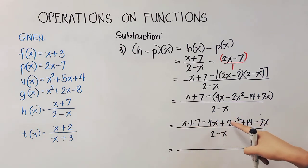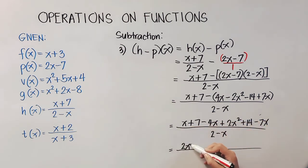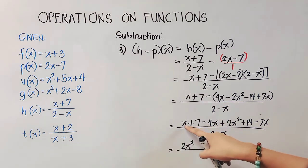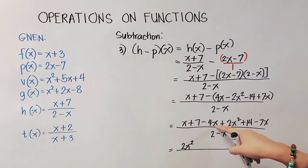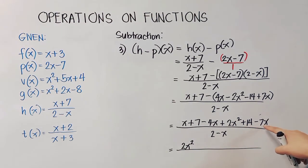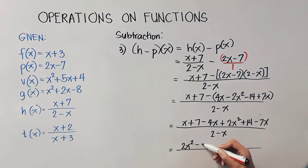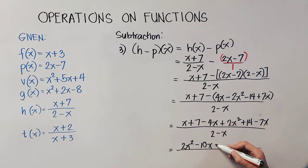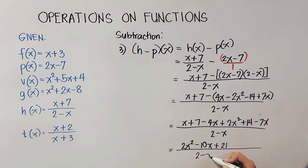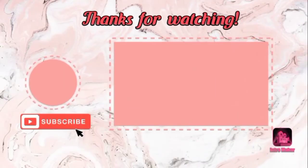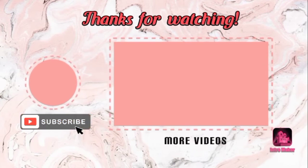Inspecting like terms: only one x² term, so copy 2x². For x terms: x − 4x − 7x = −10x. Constants: 7 + 14 = 21. Copy the denominator (2 − x). Final answer: (2x² − 10x + 21) / (2 − x). That is all for today — thank you and see you on our next video lesson!